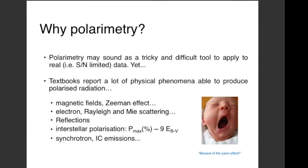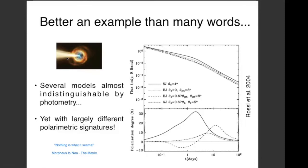I could in principle begin by mentioning the many known phenomena able to produce polarization, or phenomena where polarimetry analysis can tell us a lot about emission processes, how light and photons interact during their flight, and so on. But possibly much more interesting is an example. This plot comes from a paper by Elena Rossi in 2004. I usually try to quote the very first paper where something is introduced, although there are of course later papers discussing the same thing. But I will show this plot again later.